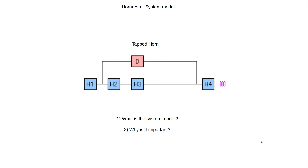What is the system model, and why is it important? Basically, the system model is a block diagram. There will be different blocks connected and arranged in a specific way to create a virtual representation of your loudspeaker. This allows the software HornRasp to run simulations and to predict the response of your loudspeaker — the response can be the sound pressure level, the phase, and many other responses available inside the software.